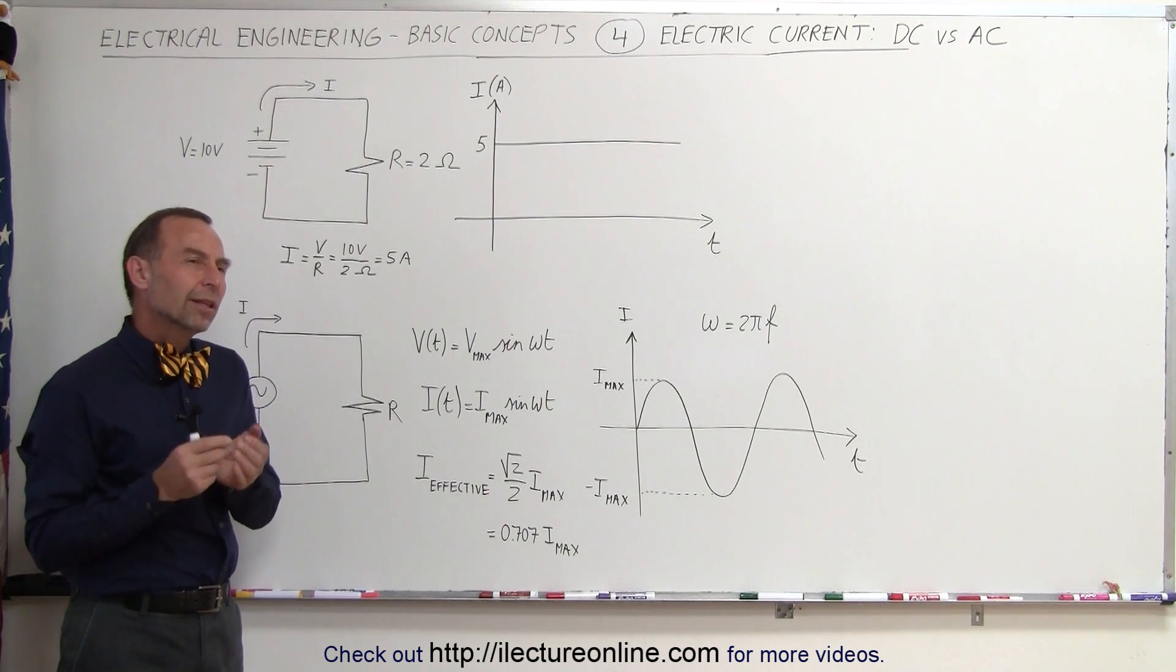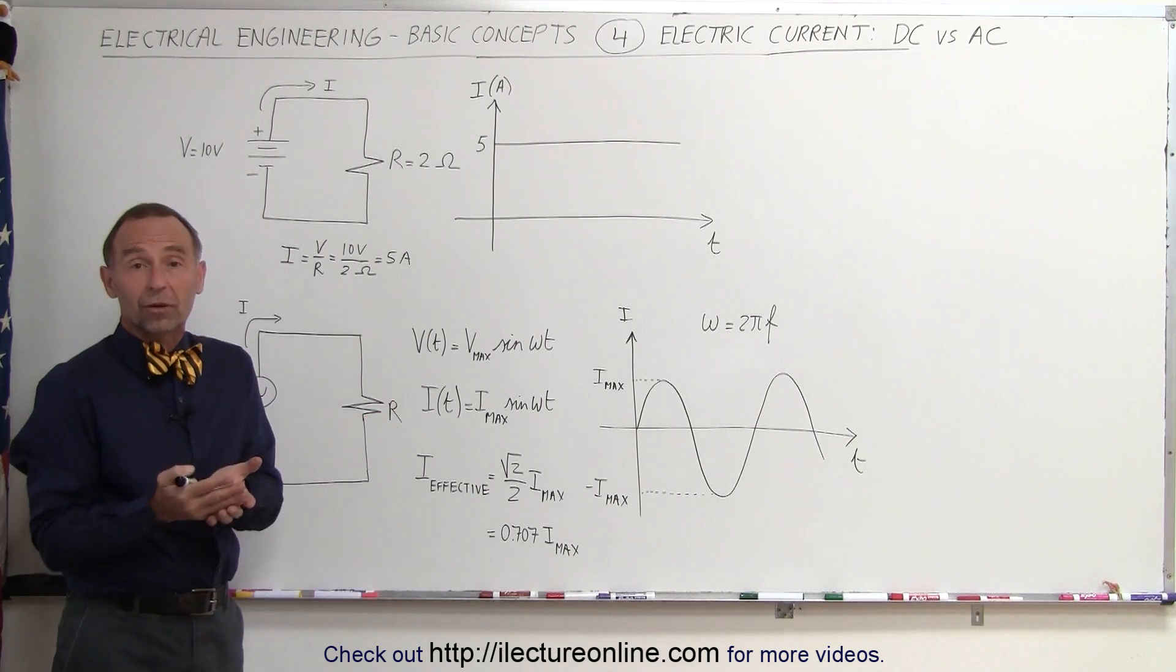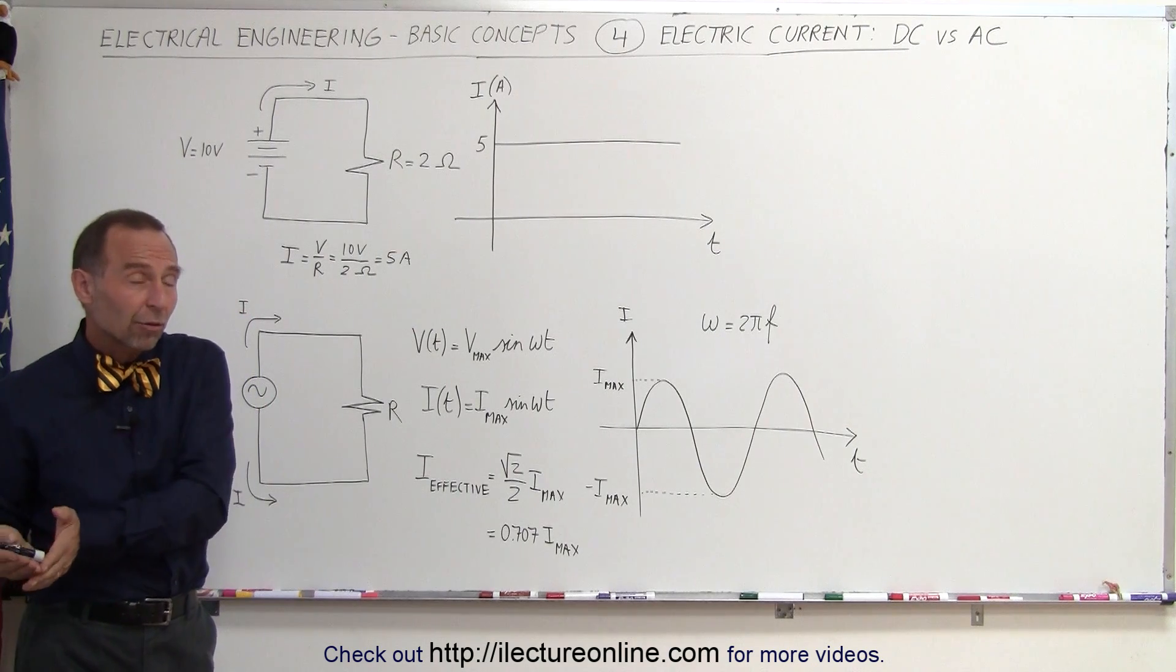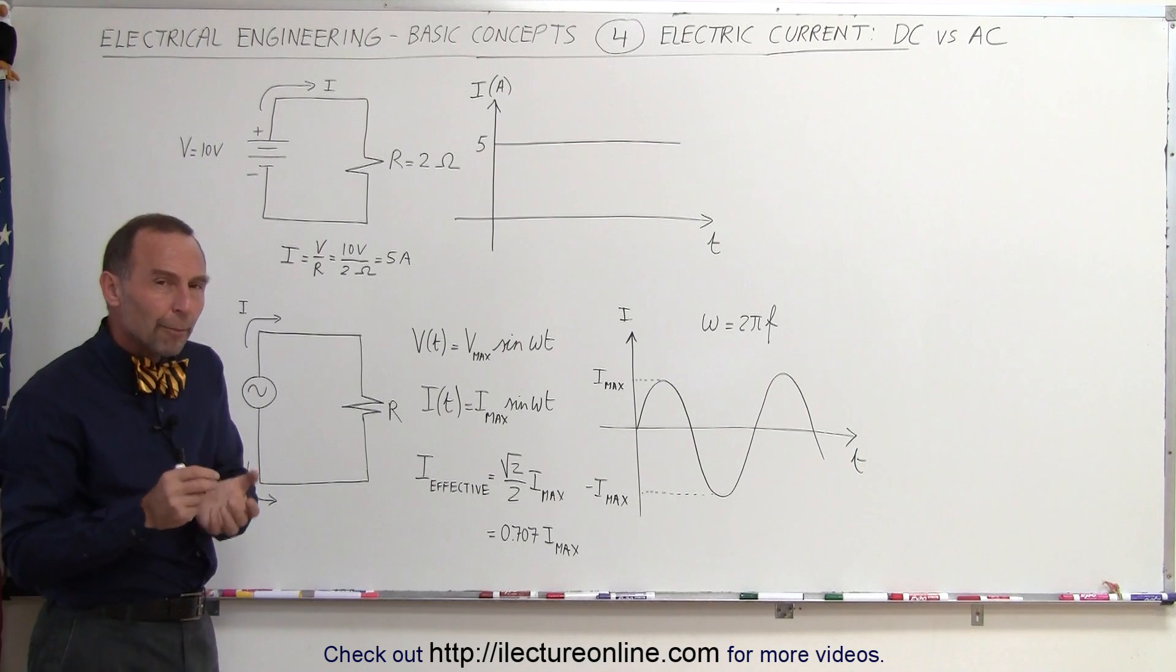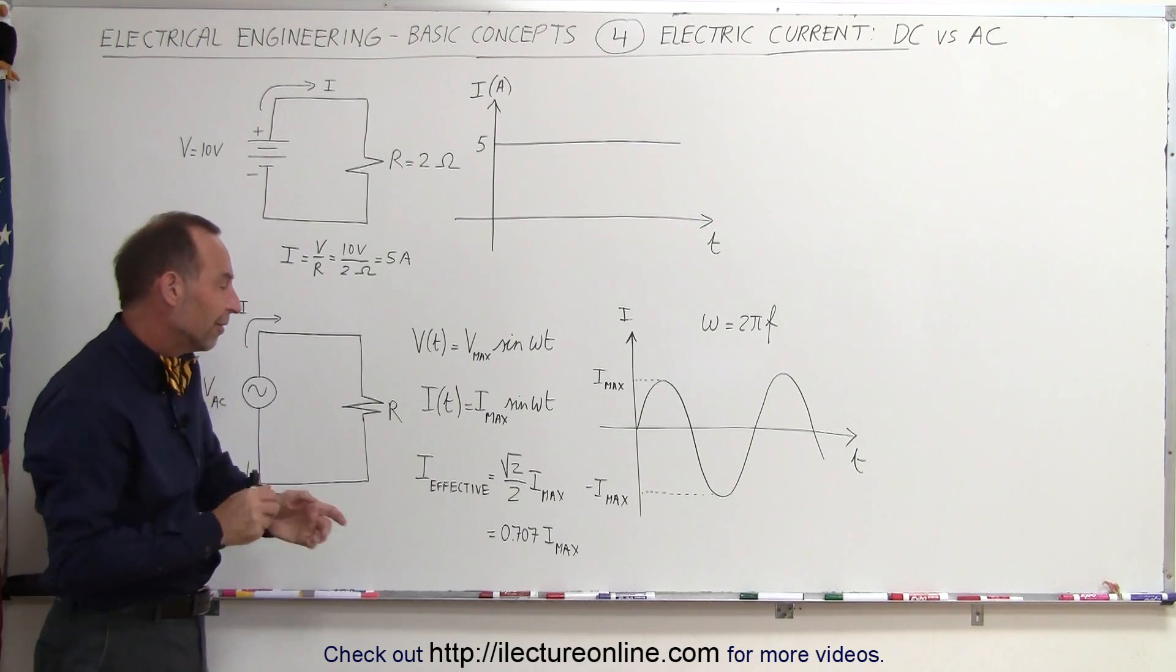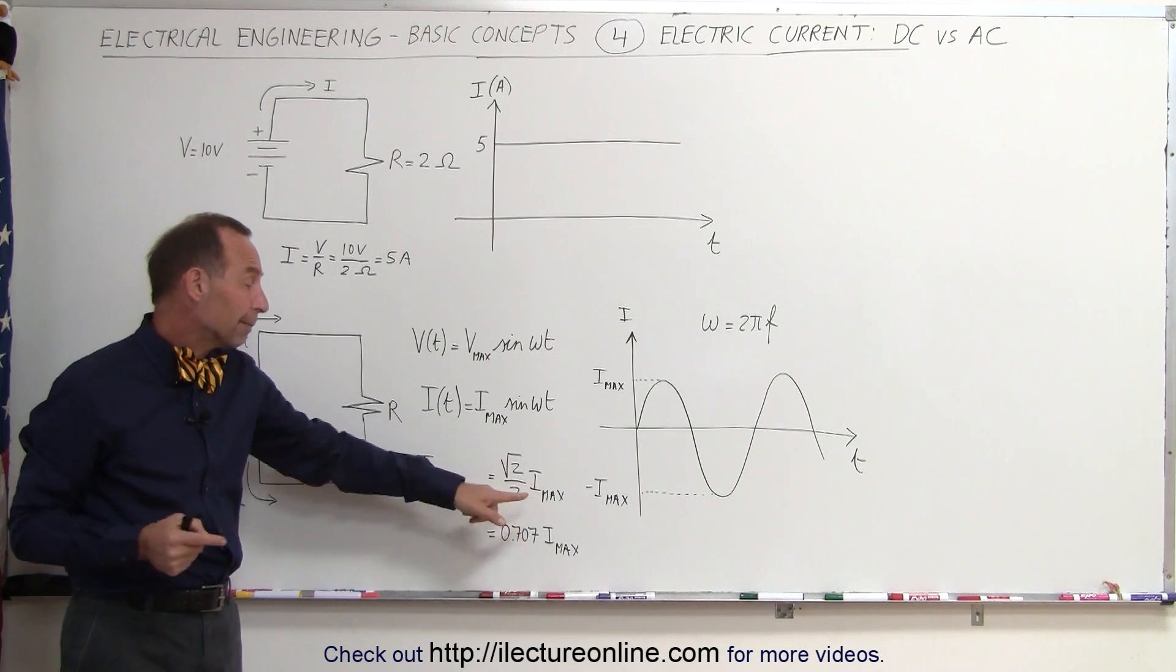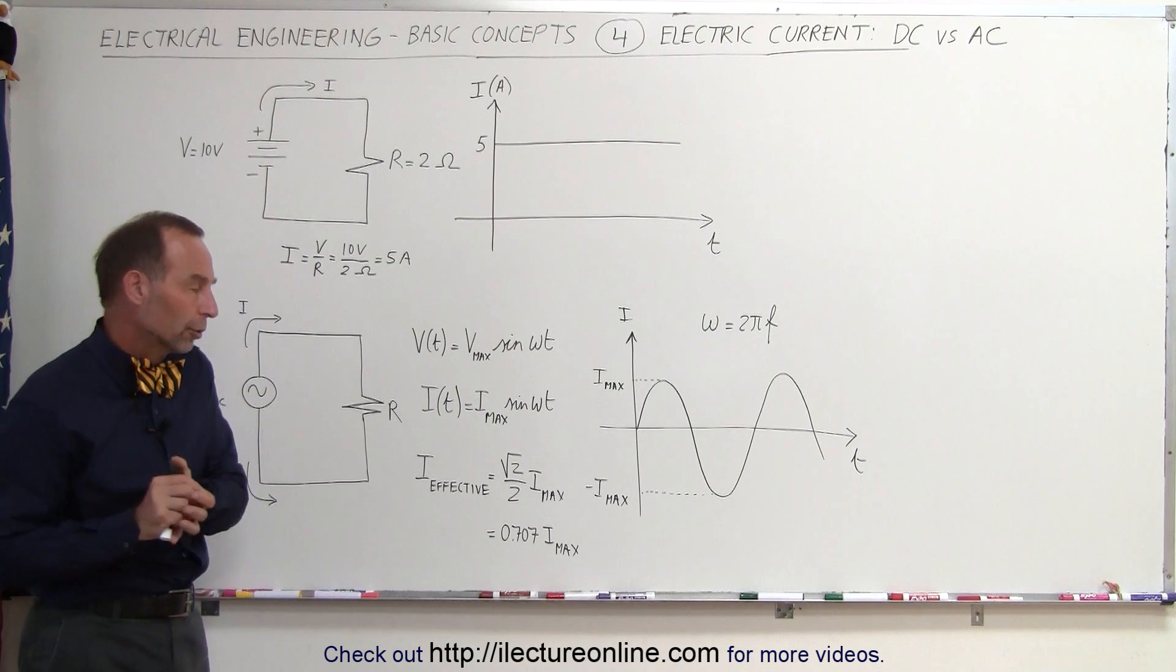Now you can say perhaps that the average current would be zero because half the time it's flowing in one direction, the other half the time it's flowing in the other direction, but that's not really true. Well, in a sense the average current is zero, but the effective current is what you get when you take the maximum current and multiply it by the square root of 2 over 2. That's called the root mean square value of the current, and we'll get into that in more detail later.